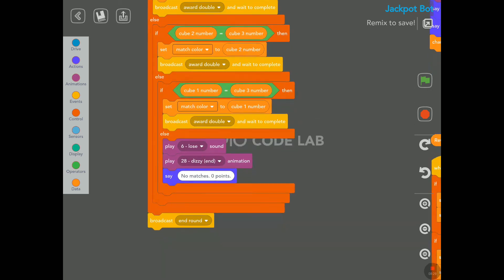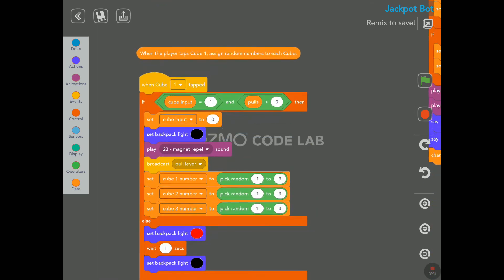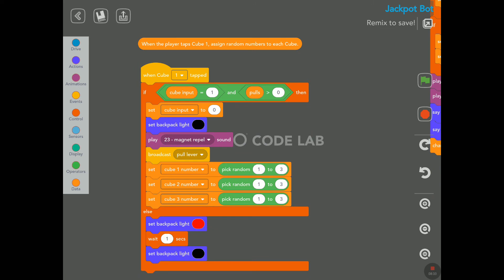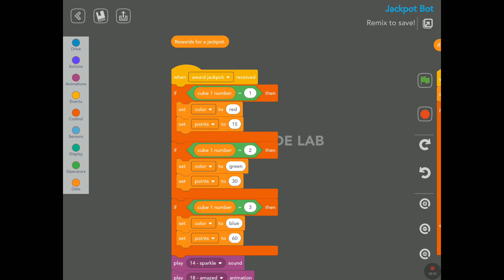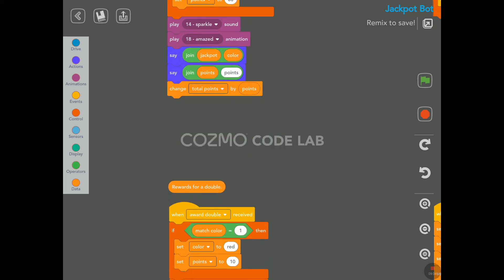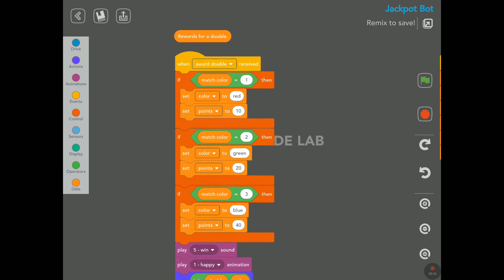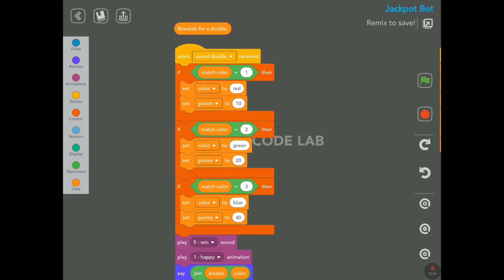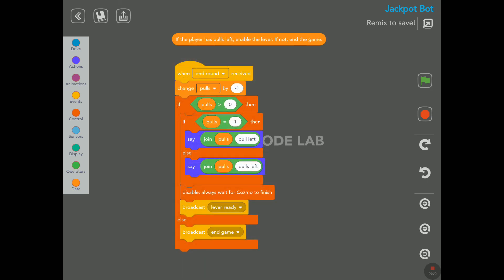When the player taps cube one, assign random numbers to each cube. Rewards for a jackpot. Hey, we see the points here. If we have a jackpot of all red, it's 15 points, all green 30, and all blue 60. So you do get more points depending on the color. Rewards for a double. Again here we see the points. If the player has pulls left, enable the lever. If not, end the game. Okay, very simple here.